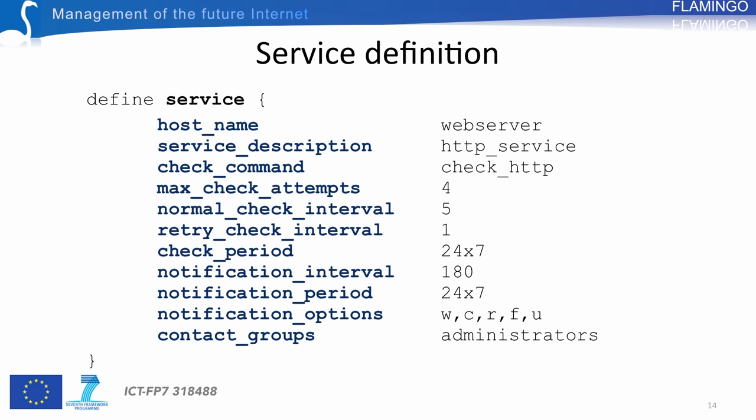max_check_attempts specifies the number of times a check must be performed before the new status is confirmed. normal_check_interval and retry_check_interval indicate the frequency of checks: normal_check_interval is the time between checks when things are running properly — every five minutes — while when something goes wrong, the frequency changes to one minute between checks, with the objective of rapidly reaching a confirmed state. The check_period here is again 24x7, and the notification_interval is the same as for the host: 180 minutes.